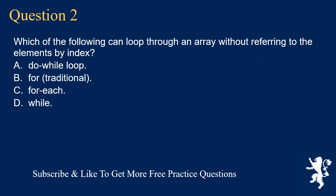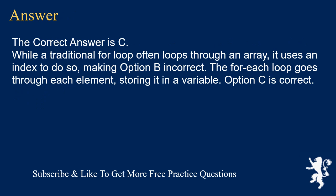Question 2. Which of the following can loop through an array without referring to the elements by index? A. Do-while loop. B. For traditional. C. For each. D. While. The correct answer is C. While a traditional for loop often loops through an array, it uses an index to do so, making option B incorrect. The for-each loop goes through each element, storing it in a variable. Option C is correct.